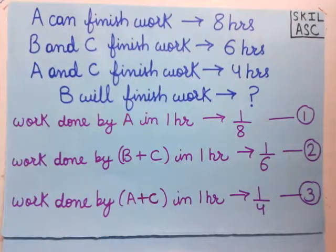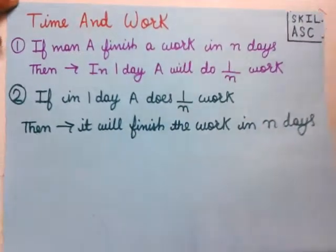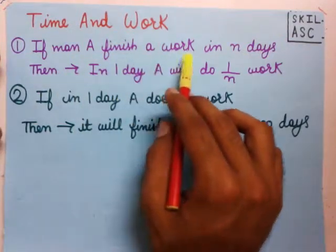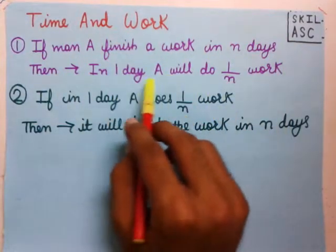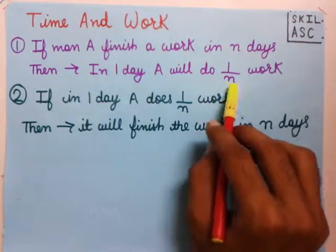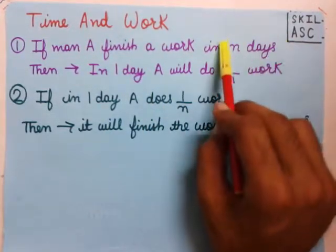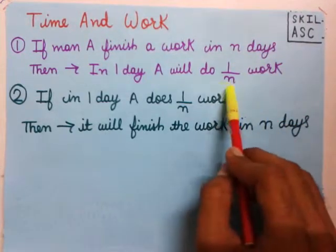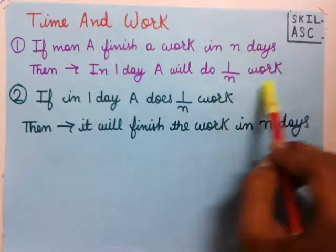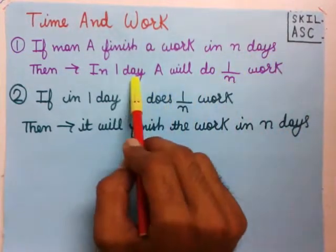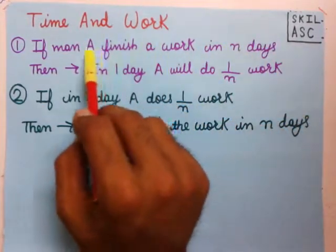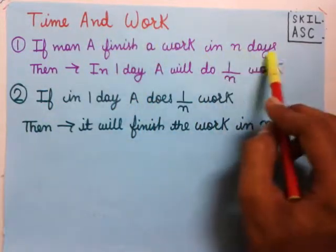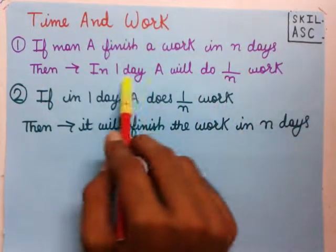First, let us see rule number one about time and work. Rule number one says that if man A finishes the work in N days, then work done by A in one day will be 1/N. We take the reciprocal of N days to get 1/N — the amount of work done by A in one day.